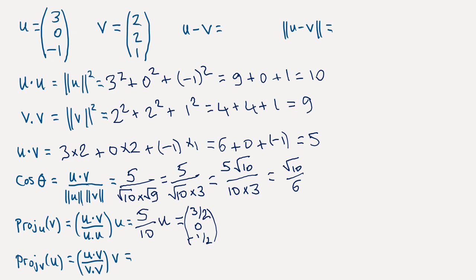And let's do the projection of u on v. So now the formula becomes u dot v over v dot v times the vector v. And u dot v was 5. V dot v is 9. And v itself is the vector 2, 2, 1. So we'll have 10 ninths, another 10 ninths, and 5 ninths.